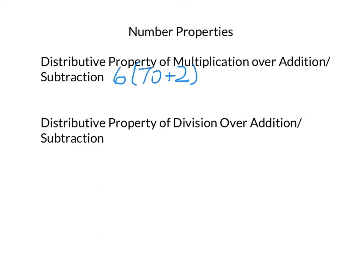So 6 times the sum of 70 and 2 is we multiply each term in the parentheses by the 6. So this would be 420 plus 12. And that would equal, of course, 432. And this would be the distributive property of multiplication over addition, simply because of this add sign right here. And, of course, we're multiplying.